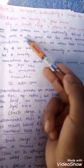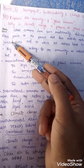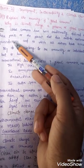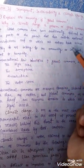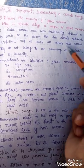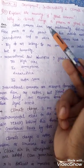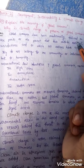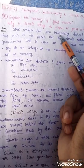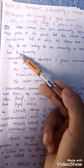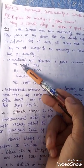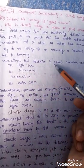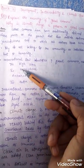Global commons have been traditionally defined as those parts of the planet that fall outside national jurisdiction and to which all nations have access. So, all nations have rights over global commons. Now, international law identifies four global commons.